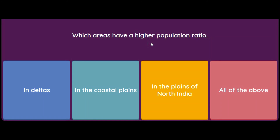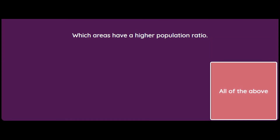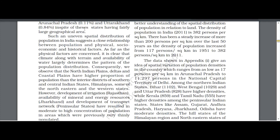Which areas have a higher population ratio — deltas, coastal plains, or the plains of northern India? The answer is all of the above. The book states that the spatial distribution of population in India suggests a close relationship between population and physical, socio-economic, and historical factors. Climate, terrain, and availability of water largely determine population patterns, and the north Indian plains, deltas, and coastal plains have higher proportions of population.